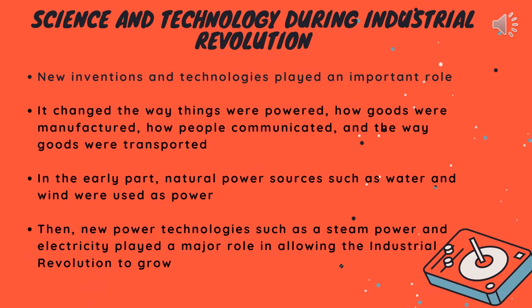The next slide is about science and technology during the industrial revolution. New inventions and technology played an important role. It changed the way things were powered, how goods were manufactured, how people communicated, and the way goods were transported. In the early part, natural power sources such as water and wind were used. Then new power technology such as steam power and electricity played a major role in allowing the industrial revolution to grow.